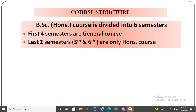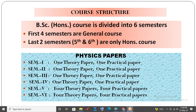Course Structure. The B.Sc. Honours course is divided into six semesters. The first four semesters are general course, while the last two semesters — 5th and 6th — are only honours course. From semester 1 to semester 4, you have one theory paper and one practical paper each. Besides physics papers, you also have to study Mathematics and Chemistry papers.